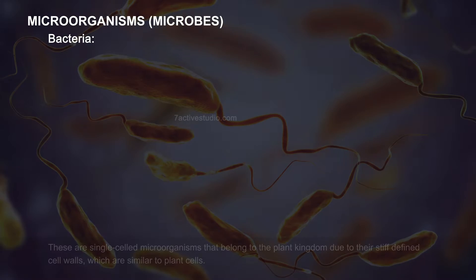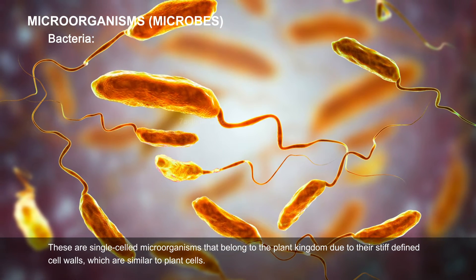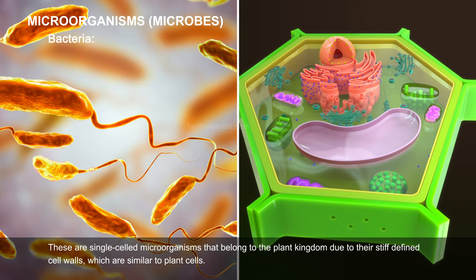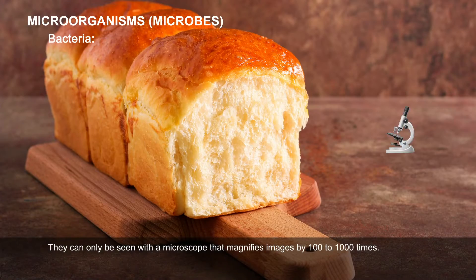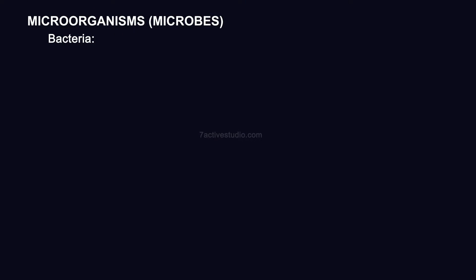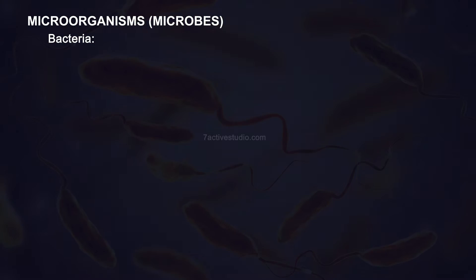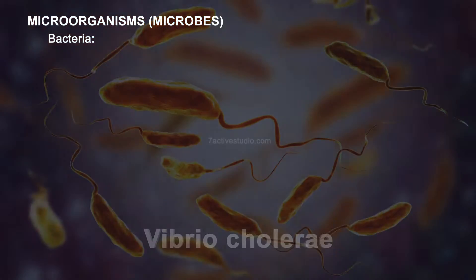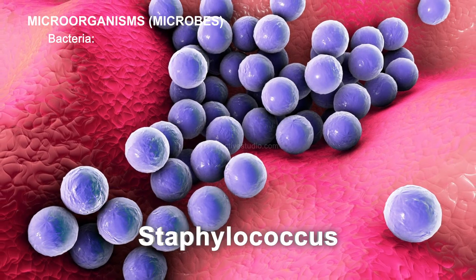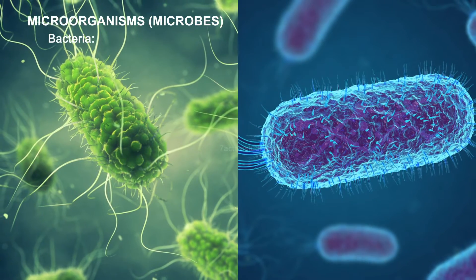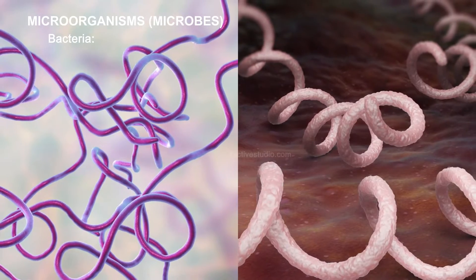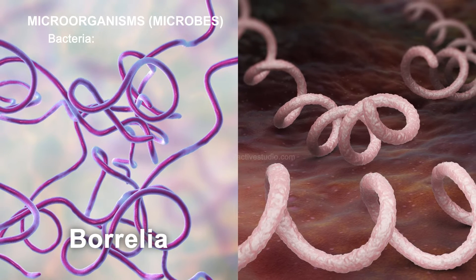Bacteria. These are single-celled microorganisms that belong to the plant kingdom due to their stiff, defined cell walls, which are similar to plant cells. They can only be seen with a microscope that magnifies images by 100 to 1,000 times. Types of bacteria are based on their shapes: comma-shaped Vibrio cholerae; spherical-shaped cocci such as Streptococcus and Staphylococcus; rod-shaped or bacilli such as Salmonella and E. coli; and spiral-shaped or spirilla such as Borrelia and Treponema.